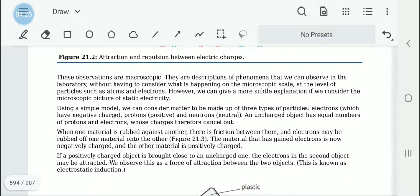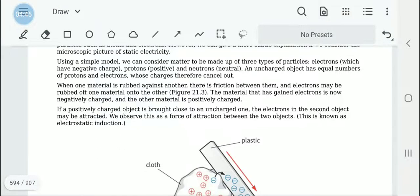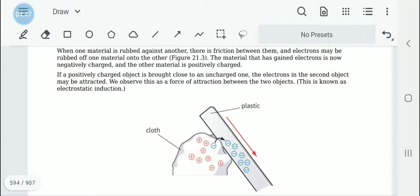When one material is rubbed against another, electrons leave. Whatever gains electrons will have a higher negative charge, and what loses electrons will have more positive charges. If we bring a negative charge close to an uncharged object, we can induce a charge.